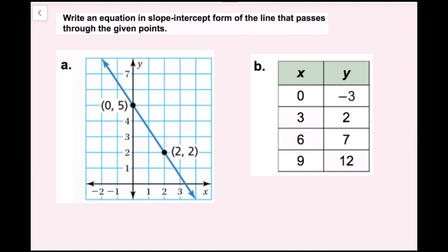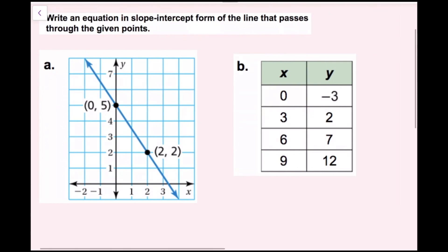For this example, we are going to write an equation in slope-intercept form of the line that passes through the given points. The first thing I'm going to write down is the equation of a line in slope-intercept form. The general equation is y equals mx plus b, where m is the slope of the line and b is the y-intercept. Looking at the graph, it's actually pretty simple, because we can easily identify the slope and the y-intercept just by looking at the graph.